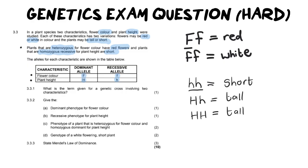Going into our first question, it says, what is the term given for the genetic cross involving two characteristics? We've just said this out loud already, but it is a dihybrid.